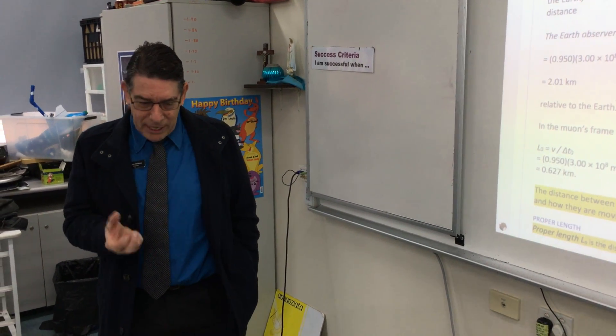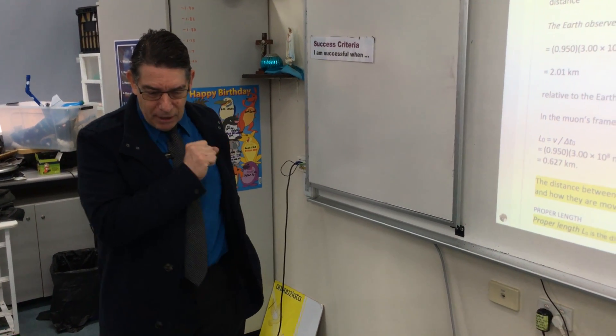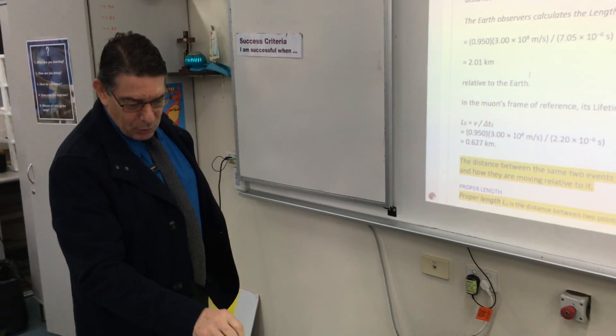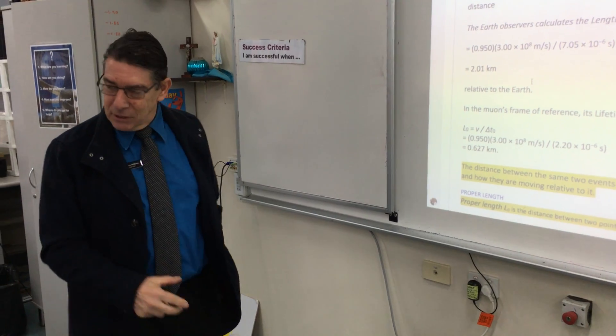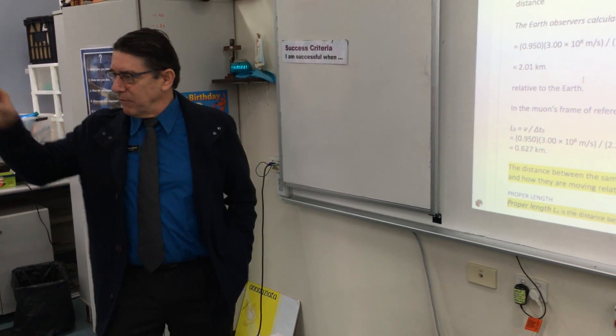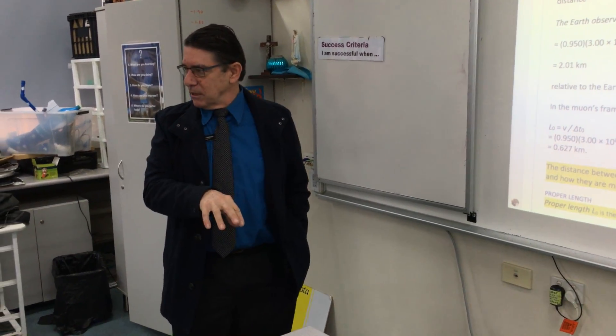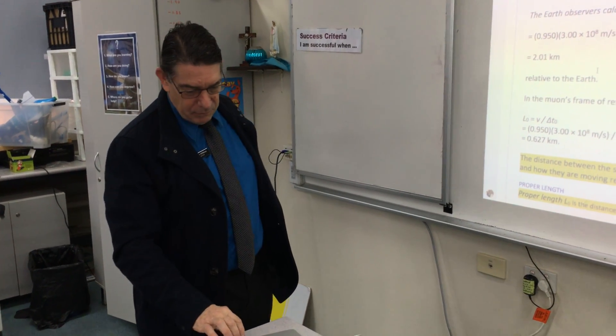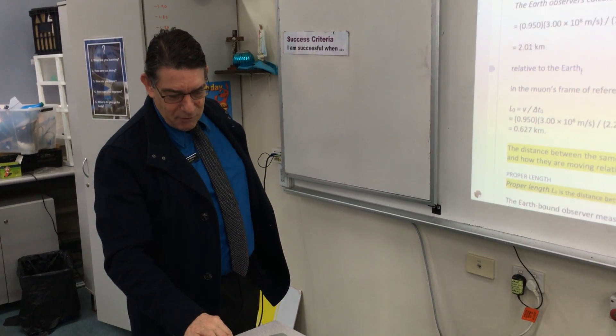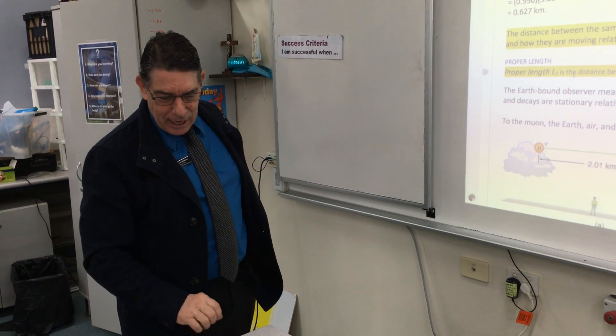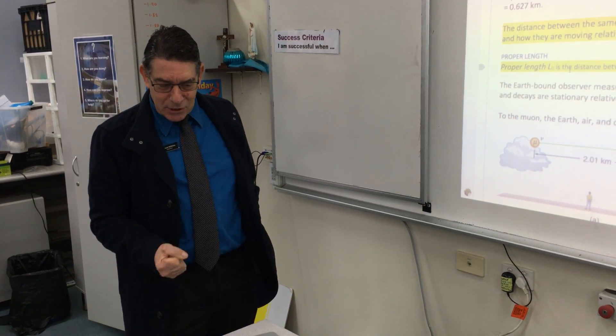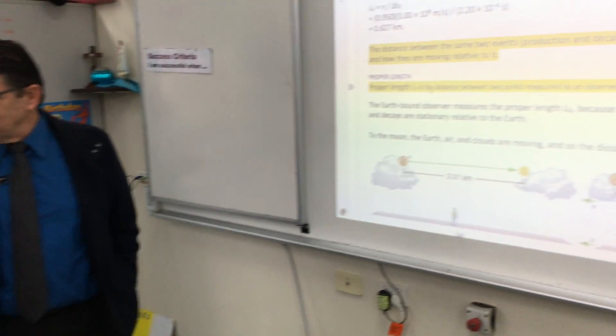So the muon's got time dilation, it sees it at 2.2 microseconds. When you work that out you get different distances for both of those - one for what you perceive and one for what I'm actually recognising. So the distance between the same two events, the production and decay of the muon, depends on who measures it and how they are moving relative to it.